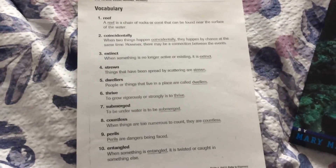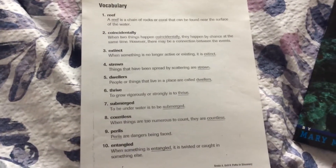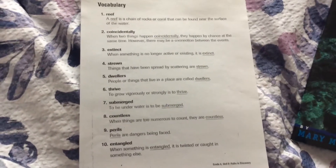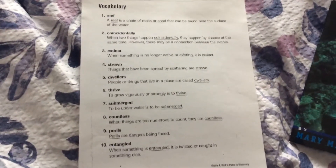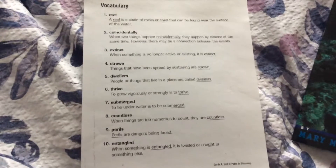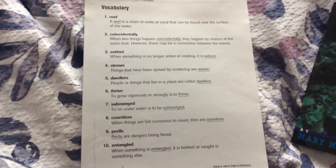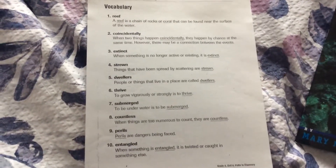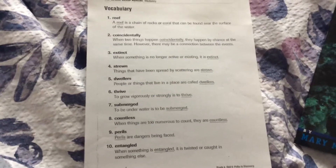Submerged. To be underwater is to be submerged. Countless. When things are too numerous to count, they are countless. Perils. Perils are dangers being faced. Entangled. When something is entangled, it is twisted or caught in something else.